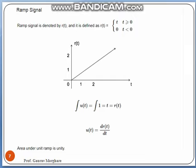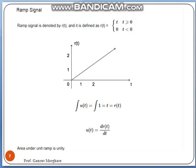The next signal is the ramp signal. A ramp signal is a linear signal with a slope, denoted by r(t). It has the value of t for t ≥ 0, meaning as time increases the amplitude also increases. The x-axis shows time while the y-axis shows r(t). So at t=1 it has magnitude 1, and at t=2 it has amplitude 2. If we integrate the unit step function we get r(t); if we differentiate r(t) we get the unit step function, and if we differentiate r(t) twice we get the impulse function.